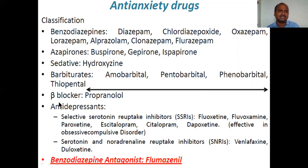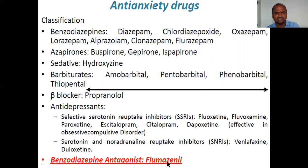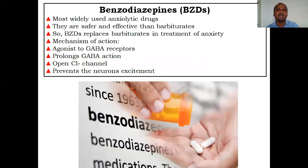Additionally in anxiety, doctors will also give beta-blockers like propranolol to control symptoms. Antidepressants — covered in a separate video — such as SSRIs (selective serotonin reuptake inhibitors) are also used. And there is the benzodiazepine antagonist flumazenil, which creates a tension effect — it is the reversal drug, which is why it is highlighted.